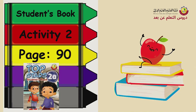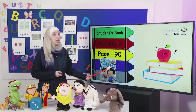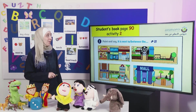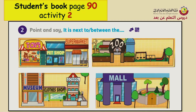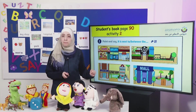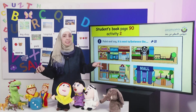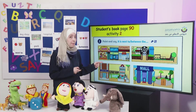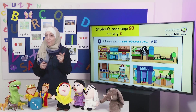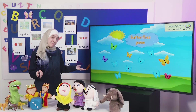Now let's open our students' book, Activity 2, page 90, and let's see what we have. Okay, dear students, look at this activity and tell me what can you see. Yes, there are different places. We will practice speaking about them using 'next to' or 'between' by playing a game.